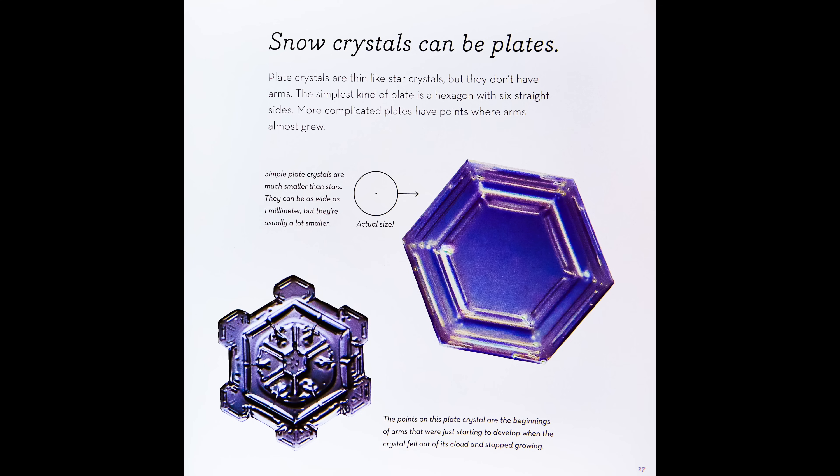More complicated plates have points where arms almost grew. Simple plate crystals are much smaller than stars; they can be as wide as one millimeter, but they're usually a lot smaller. The points on this plate crystal are the beginnings of arms that were just starting to develop when the crystal fell out of its cloud and stopped growing.